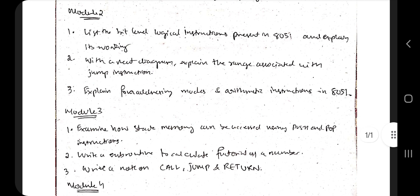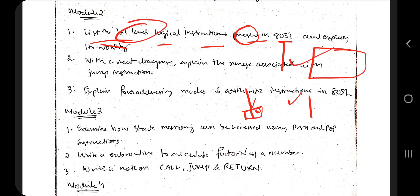Coming to Module 2, we have list the bit level logical instructions present in 8051. The logical level instructions which are in the bit format - what are present in 8051, you have to list all of them and explain their working. Basically, you will be writing the theory - what is the bit level logical instruction. Second point, you will be listing down the different ones and explain each with an example. If there is a diagram of the circuit, you'll be explaining that as well.